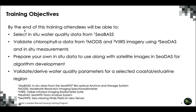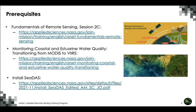The training objectives are: we will learn to select in-situ water quality data from CBAS, use CBAS data to validate chlorophyll-A data derived from MODIS and VIIRS imagery using CDAS, and prepare your own in-situ data to use along with satellite images in CDAS for algorithm development. Finally, we will validate derived water quality parameters for a selected coastal and estuarine region as a case study. Note that we will focus mainly on chlorophyll-A concentration, but this methodology can be used for other parameters as well.